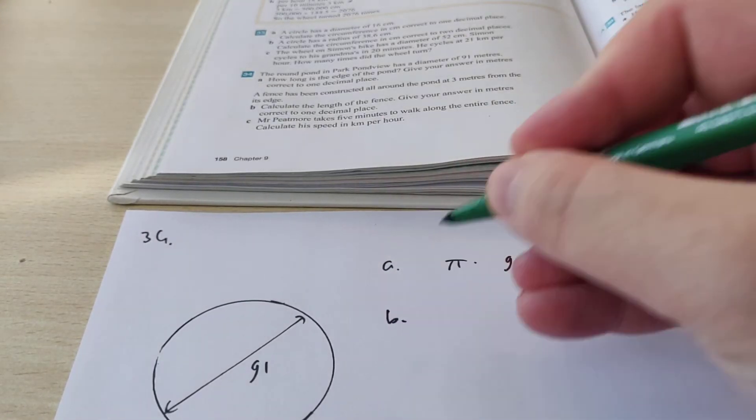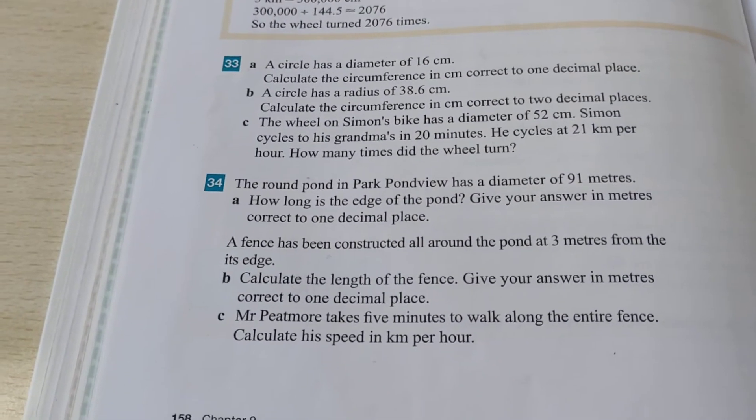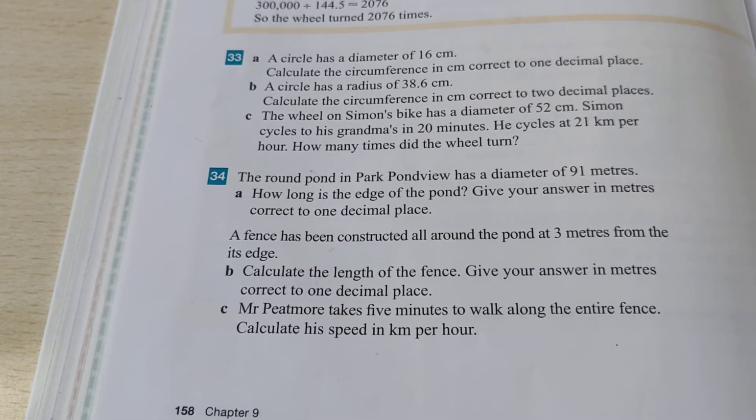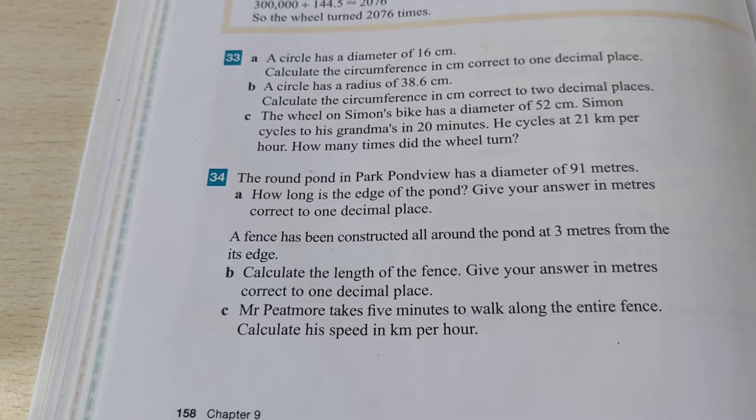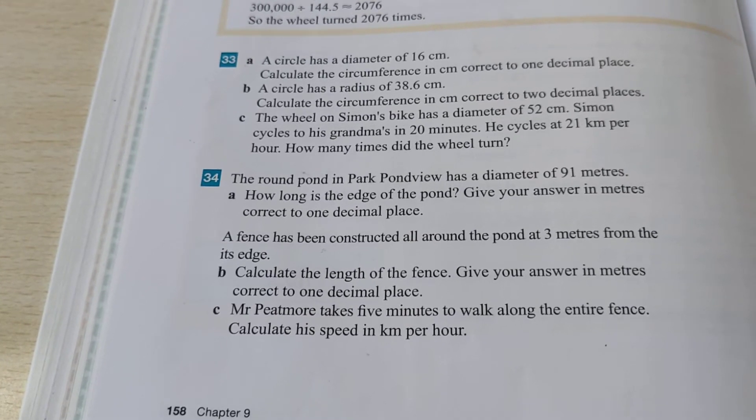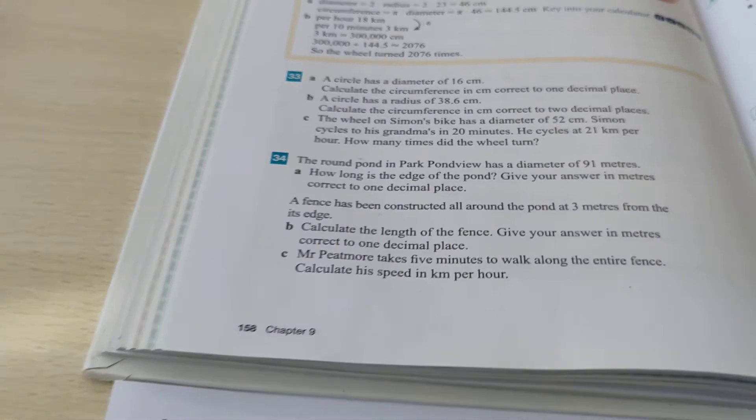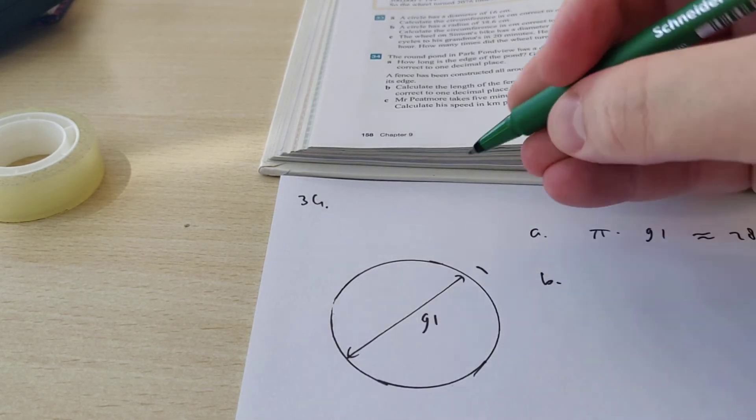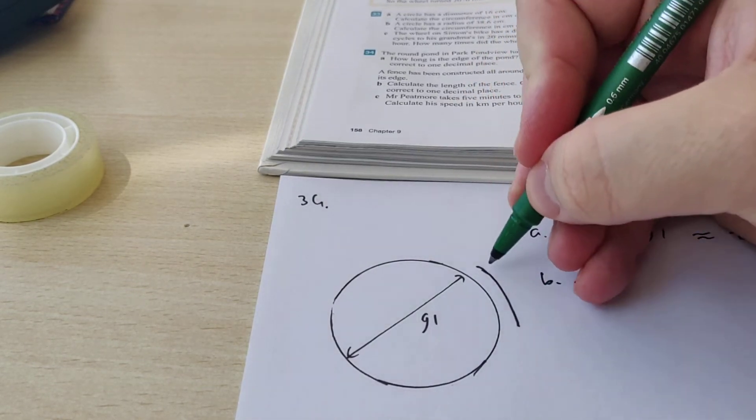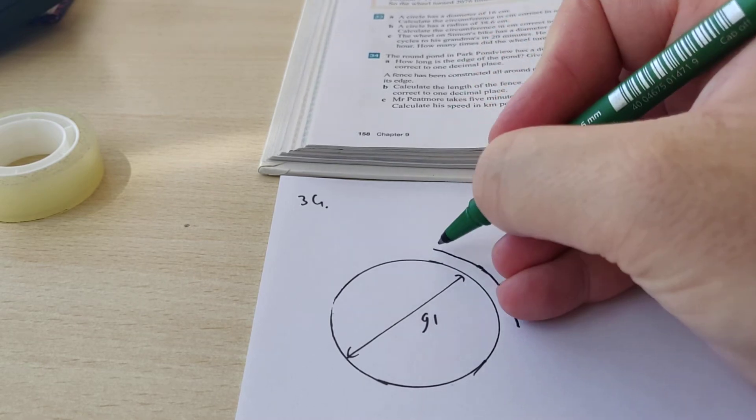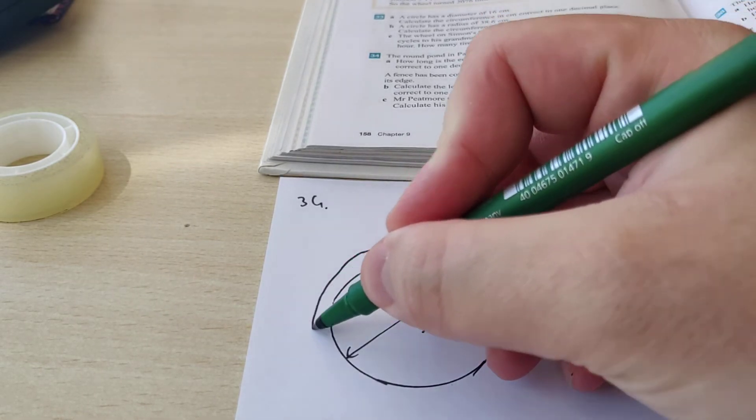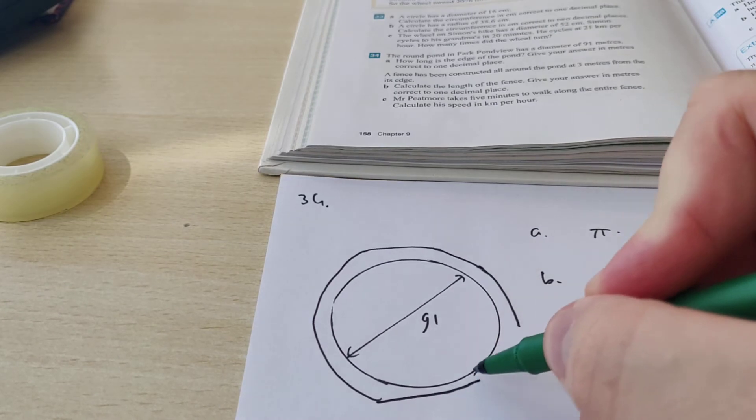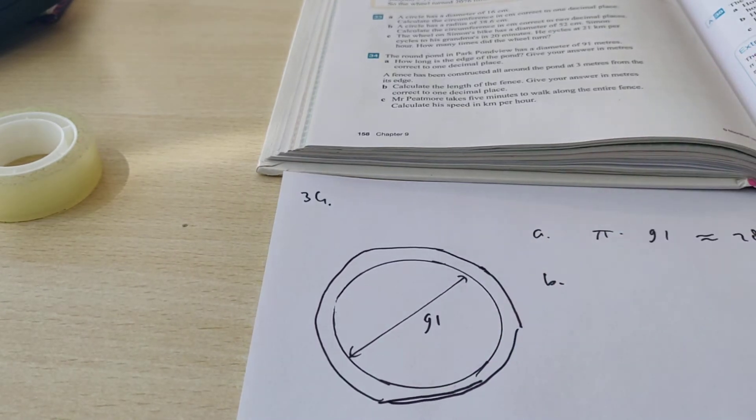Now we go to exercise B, which becomes a bit more difficult. A fence is being constructed all around the pond at 3 meters from the edge. Calculate the length of the fence, rounded to one decimal place. So if you have this pond here, at 3 meters away from it, there's going to be a fence around it. There's a second circle that goes around it all the way. I tried to draw it as good as I can, but it's probably going to turn out horrible, as you can see.